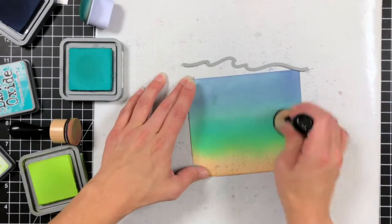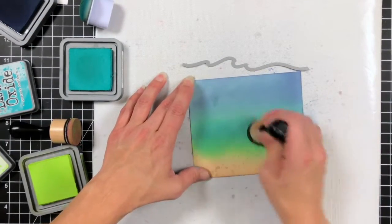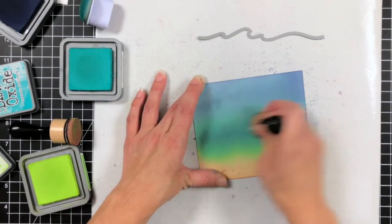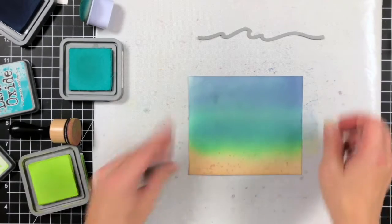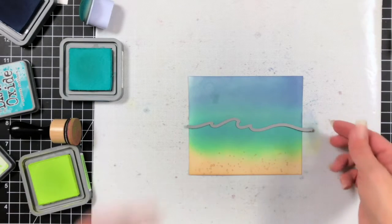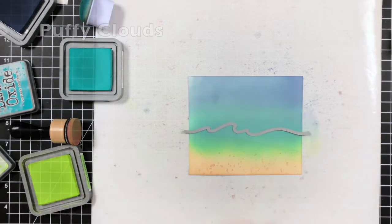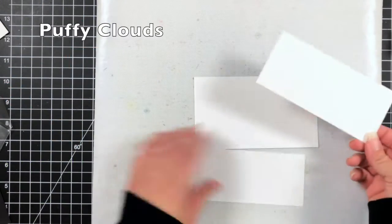I wanted a really nice smooth blend and then just bringing in that stitched waves die and kind of getting an idea how much I wanted to show. That's something I probably should have done when I started but I did want to just show you all those steps and how I kind of corrected it. I have the three layers of colors that I wanted for my water and then I can just run that through my die cut machine.